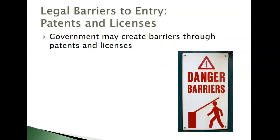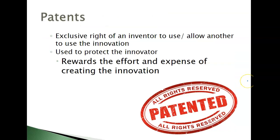It could also be legal barriers — government-assisted monopolies. Governments may create barriers through patents and licenses. Patents are the exclusive right of an inventor to use or allow another to use their innovation. It's meant to protect private property rights and encourage people to continue making new things. But if one company has a really good idea, they could definitely become a monopoly in that space until the patent runs its course. This is a reward for efforts to create continuing innovation.